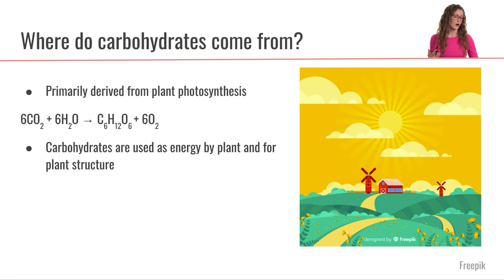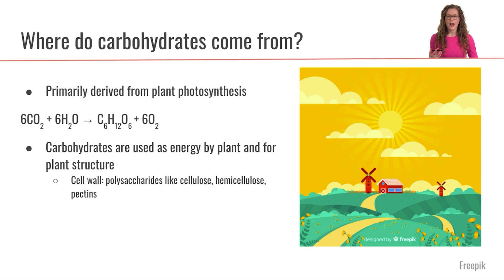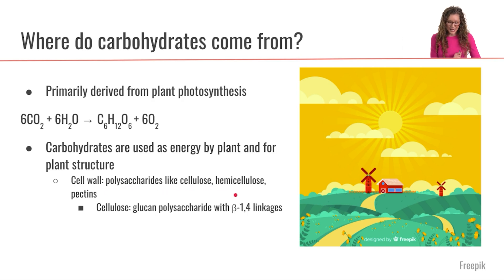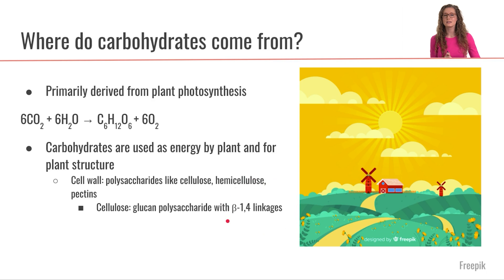For example, the cell wall of plants is going to be composed of many different kinds of polysaccharides like cellulose, hemicellulose, and pectins. These are all different kinds of carbohydrates that have a variety of glycosidic linkages — some which we can digest, some which we don't have the enzymes to digest.